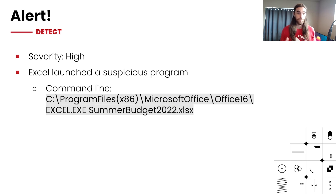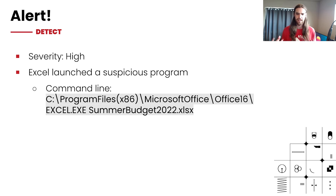Here is our alert. We have a high severity alert telling us that Excel launched a suspicious program, and it includes a related command line. Sometimes alerts provide a lot of information, sometimes not a whole lot — it depends entirely upon the tool. In this case we don't have a lot to go off of, and we have to figure out what this alert is actually telling us in order to do some additional investigation. Let's break this down to frame the rest of our investigation.